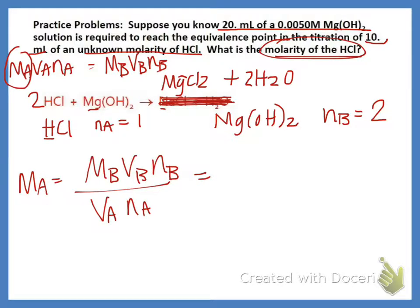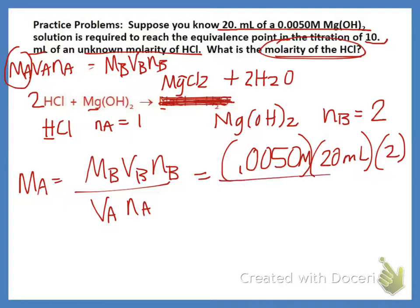So now we plug in the molarity of our base, 0.0050M, times our volume of 20 mL, times our NB, which was 2. And then we're going to divide by the volume, which was 10 mL, and then our NA, which was 1. Now, because we have mL on the top and bottom, we can actually leave our volumes in mL. We do not need to cancel them. We don't need to convert them to liters, because they're going to cancel out anyway. So when we do that calculation...